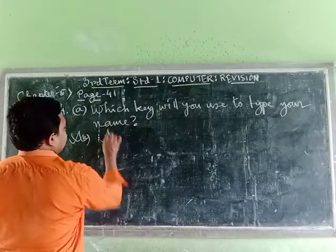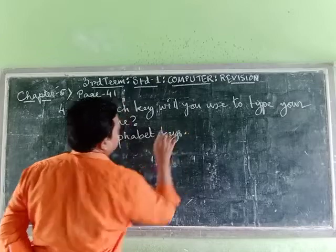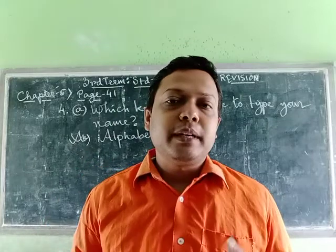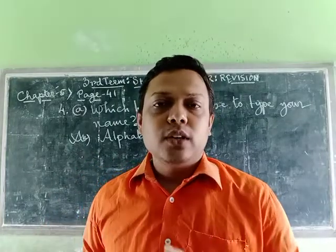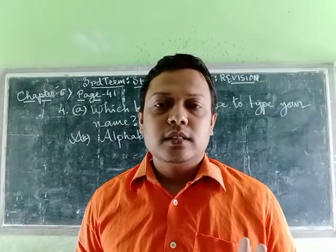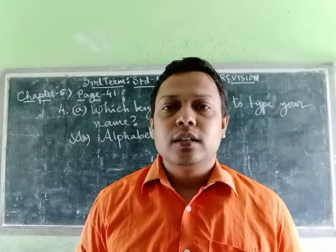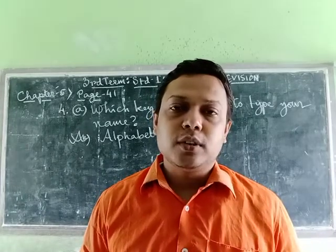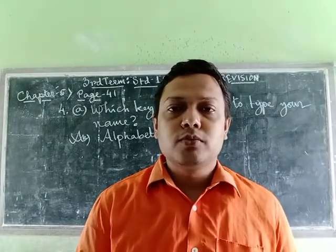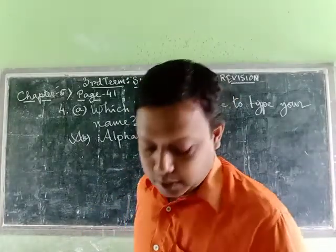The answer is alphabet keys — A, L, P, H, A, D, E, K, E, Y. Now the next question is: how many alphabet keys does a keyboard have? According to English, there are 26 letters from A to Z. So there are 26 alphabet keys on the keyboard.